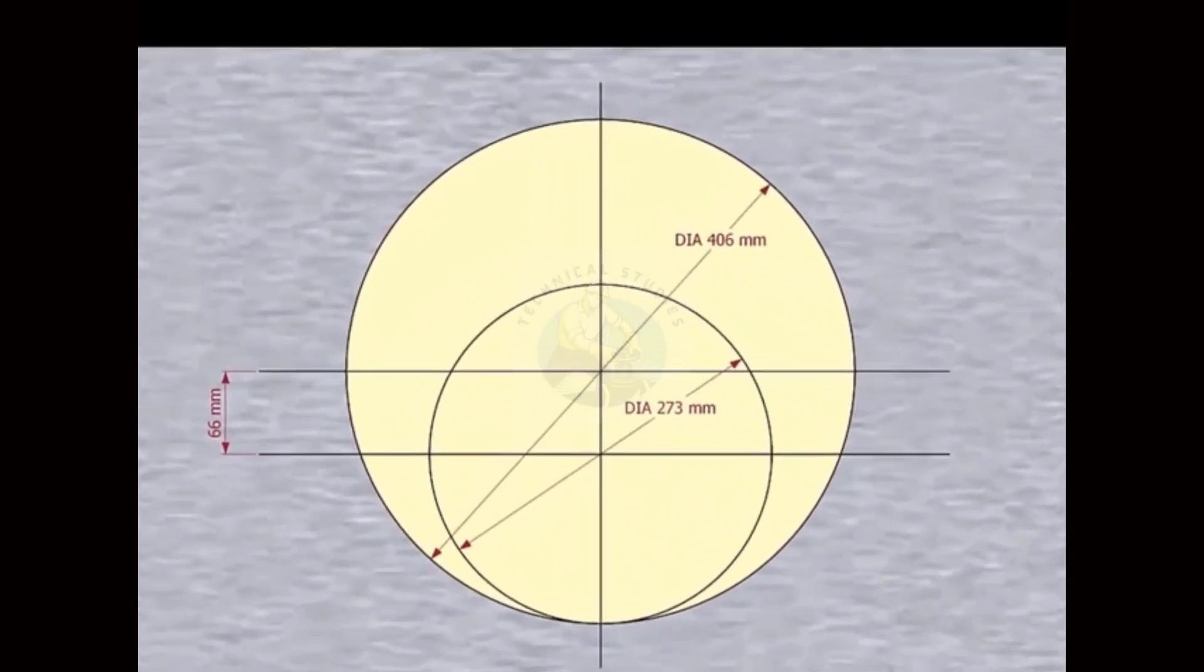Please remember that our reducer size is 16 inch into 10 inch. The large side OD is 406 millimeters, the small side OD is 273 millimeters, and the eccentricity is 66 millimeters.